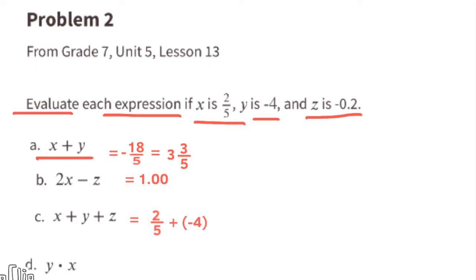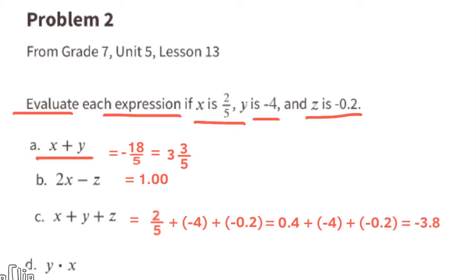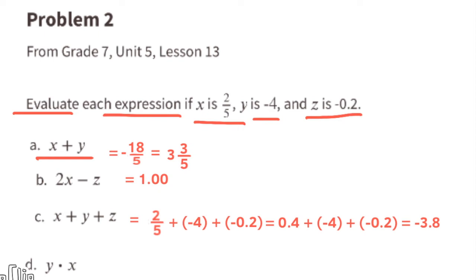Part c: x plus y plus z. Substitute x with 2/5, y with negative 4, and z with negative 2 tenths. Since 2/5 is equivalent to 4 tenths, we rewrite as 4 tenths plus negative 4 plus negative 2 tenths, which equals negative 3.8. So x plus y plus z equals negative 3 and 8 tenths.